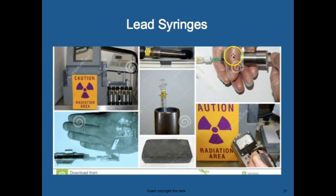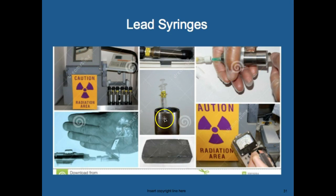The lead syringe is a cap or housing that the syringe slides inside to reduce exposure to the technologist. They draw up under the shield and store isotopes in lead syringe holders — you'll see them carrying little metal cases when going up to the floors. They walk through with a Geiger counter every day to check for spills. The lab is called a 'hot lab' because it contains radioactive isotopes.